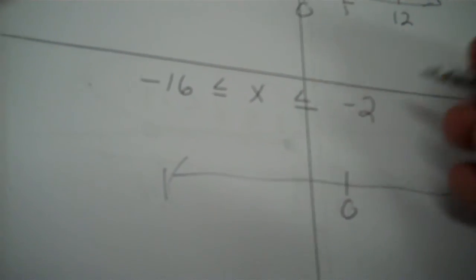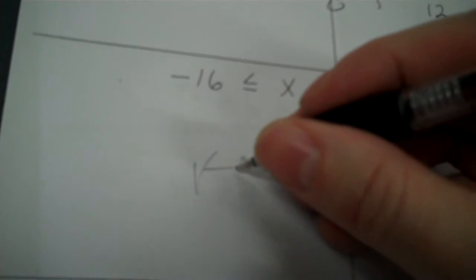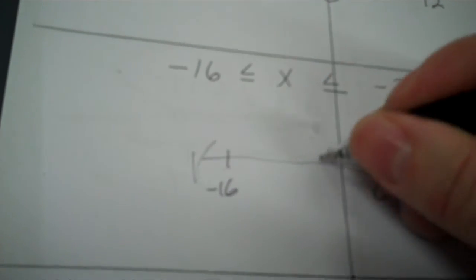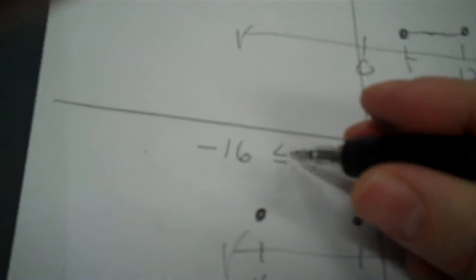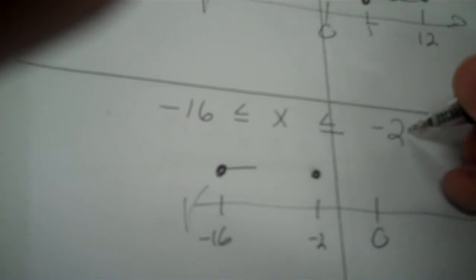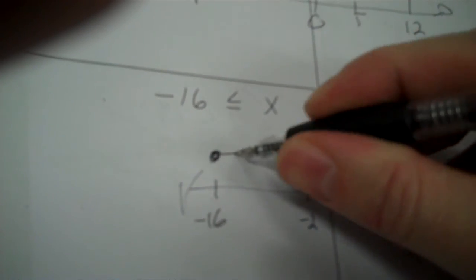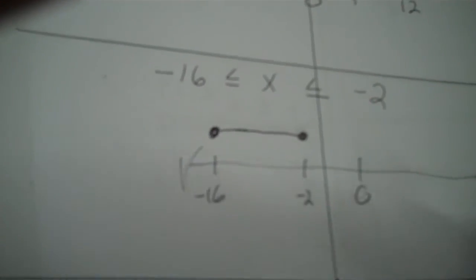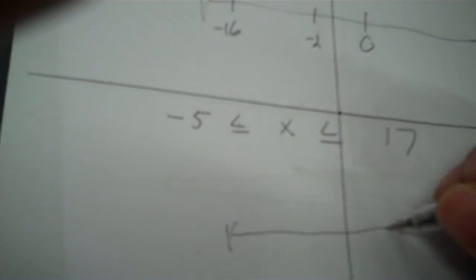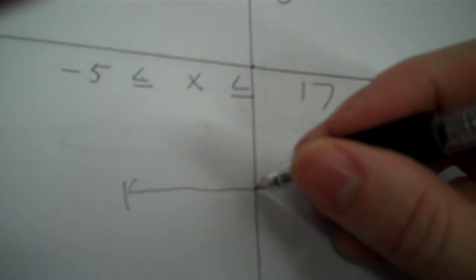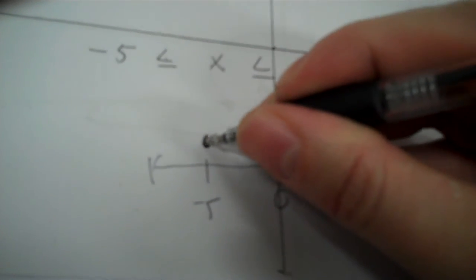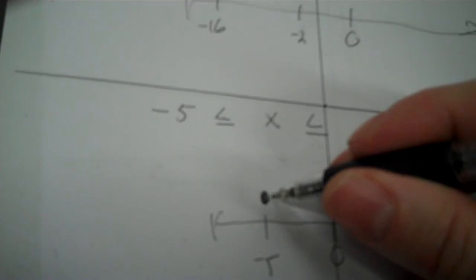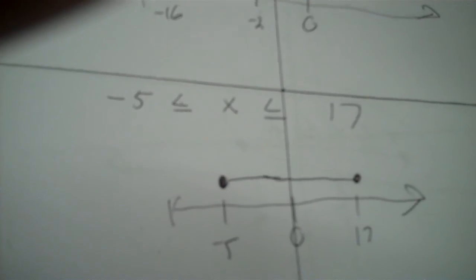0. Now they're both negative — that's okay. Negative 16 is way out here, negative 2 is here. This one's opening towards the X so this way. This is opening up towards the number so this way. Negative 5 and positive 17 — we're going to fill both those in. Opens towards the X this way. Opens towards the number this way.